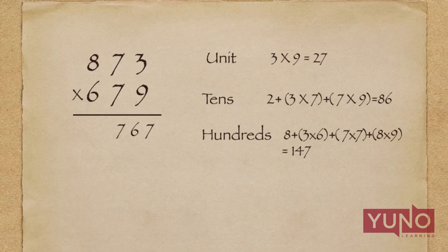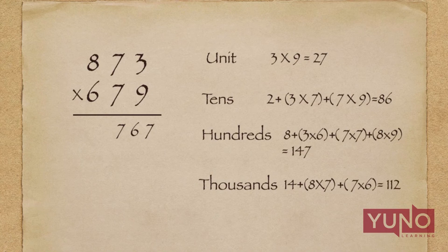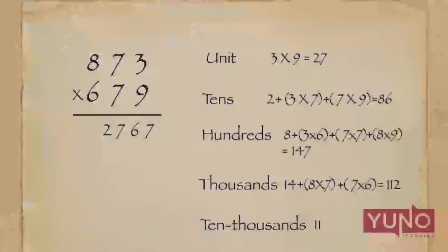This 14 will be used in the next step as a carry. I will perform the cross multiplication of the first two digits — that is 8 × 7 and 7 × 6 — and add all these multiplications along with the carry. The total will be 112. I will write 2 in the answer and 11 will be the new carry.